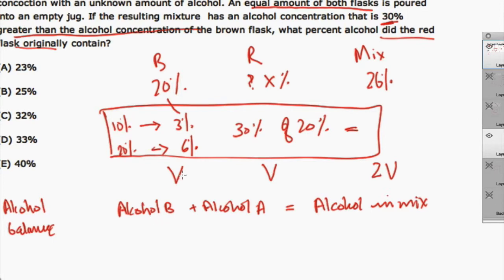So I know from B, I added a volume of V. It's 20% alcohol. So the amount of alcohol in B was 20% of V. For A, I don't know the amount of alcohol. I just know I am going to say X percent. So it's X percent of V. And in the mixture, I calculated the percent alcohol to be 26%. So the alcohol in the mixture is 26% of the volume, which is 2V.